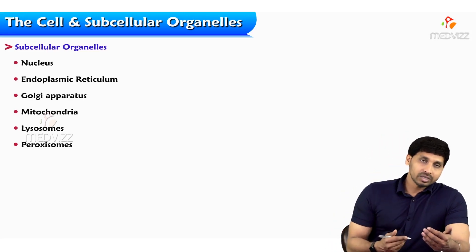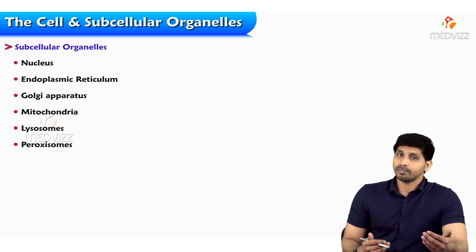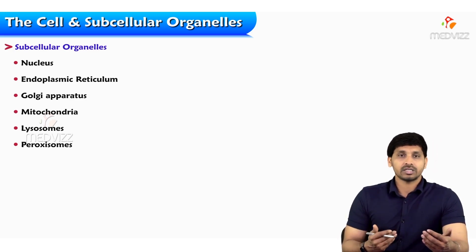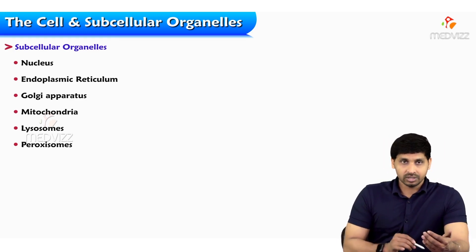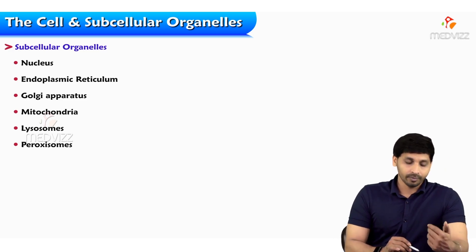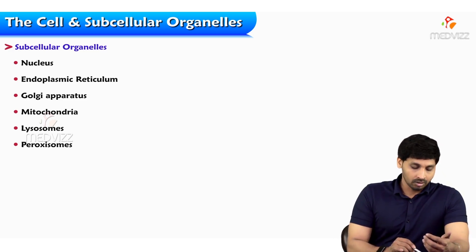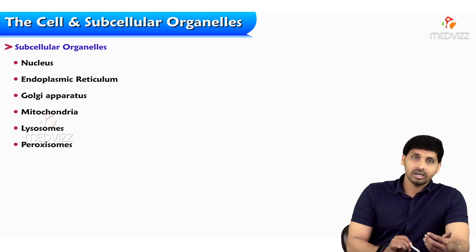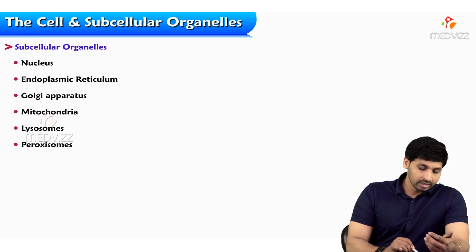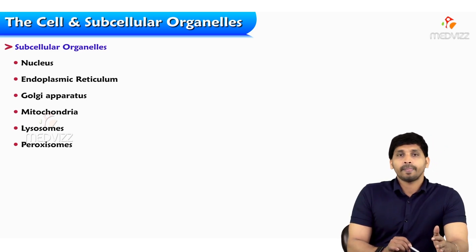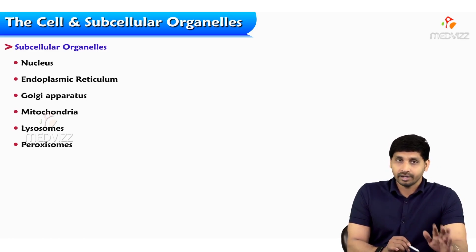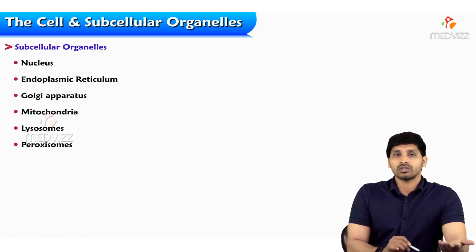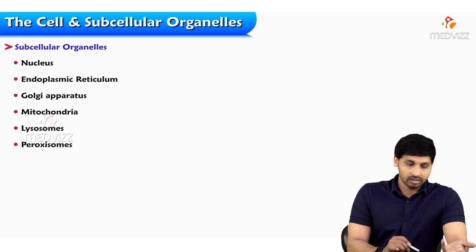Since we all belong to eukaryotic cells, it is proper to discuss eukaryotic cells and their subcellular organelles. The subcellular organelles in a eukaryotic cell playing a major role include: the nucleus, which is required for new cell synthesis — meaning DNA acting as hereditary material is involved in production of new daughter DNA via cell division.